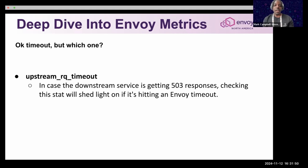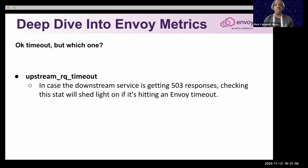The upstream_rq_timeout is at the layer 7 HTTP request level. When you use HTTP from your Nginx ingress to reach your service mesh, this may respond with a 503.